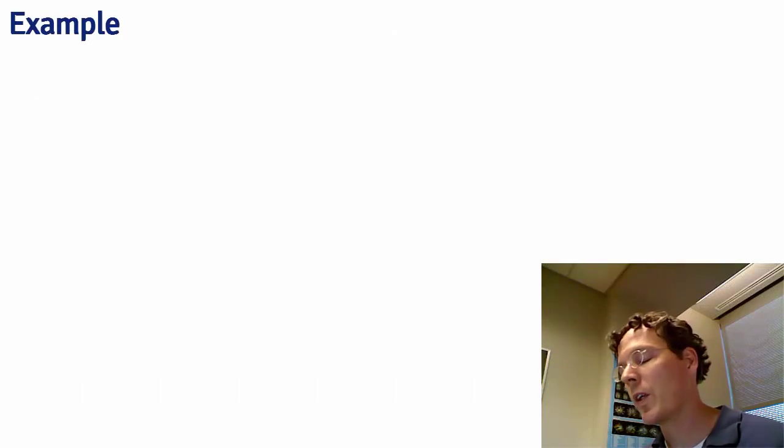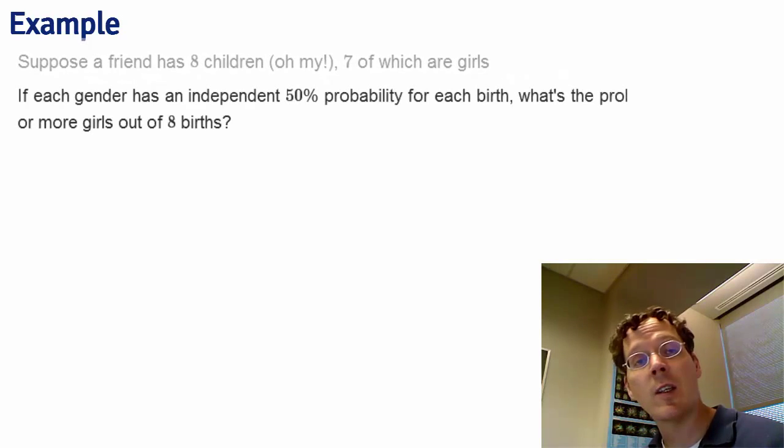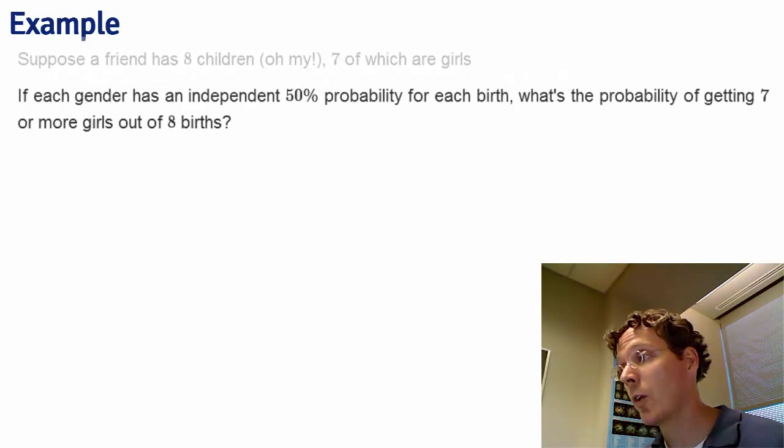Let's go through a quick example of a binomial calculation. Suppose you have a friend who has 8 children, 7 of which are girls and none are twins. If each gender has an independent 50% probability for each birth, what's the probability of getting 7 or more girls out of 8 births? Well, let's plug right into the binomial formula.